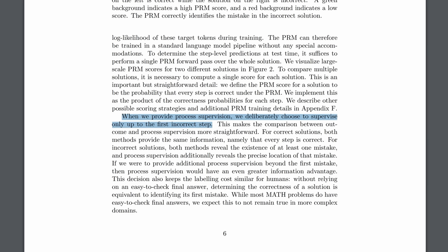And then another model trained only to predict the correctness of each step. It stops if it finds a first incorrect step. And as the paper says, both methods reveal the existence of at least one mistake. But this process supervision additionally reveals the precise location of that mistake.